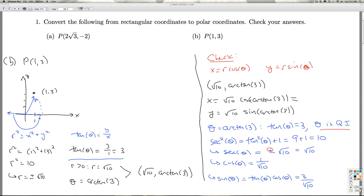So it's 3 times 1 over radical 10, or 3 over radical 10. So now I can put this in. X is radical 10 cosine arctangent 3. That's radical 10 times 1 over radical 10, which is 1, which is what it's supposed to be.